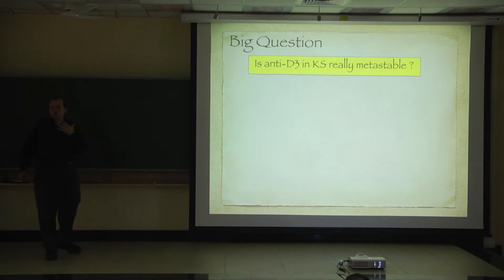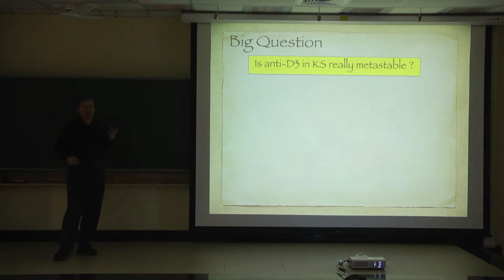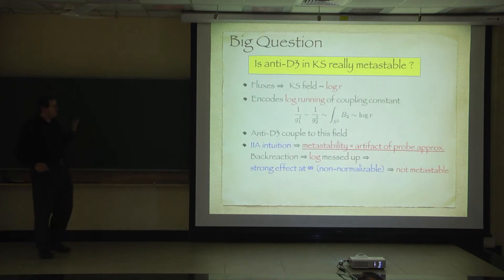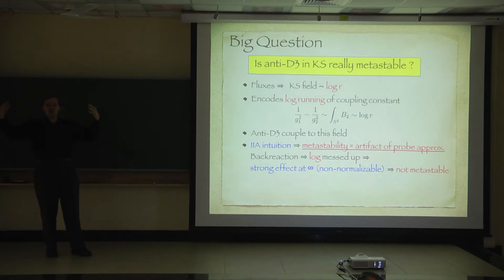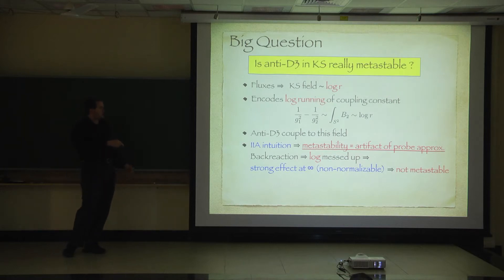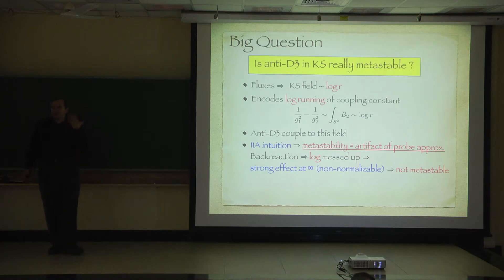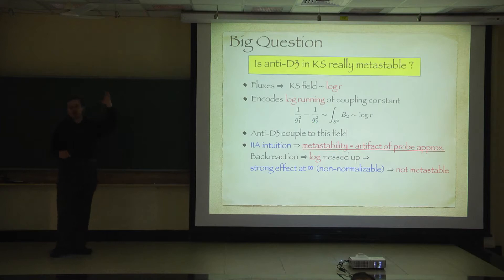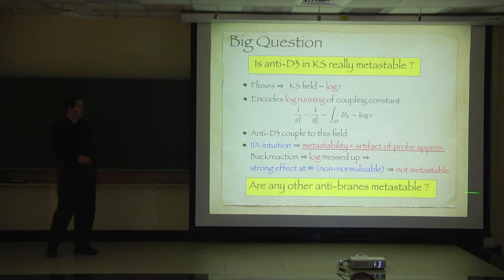If you use the type IIA intuition, you can ask: are anti-de-Sitter branes in Klebanov-Strassler really metastable? The IIA intuition is: I have a log mode, when you have a log mode you screw up the UV, and it's over. In Klebanov-Strassler there's a field which runs like a log — it's the coupling constant of the gauge theory, the integral of the B-field on some two-cycle. Anti-branes are coupled to this field. So using the IIA intuition, because anti-branes touch this log mode, the log goes all the way to infinity, and they will not give you a metastable vacuum.